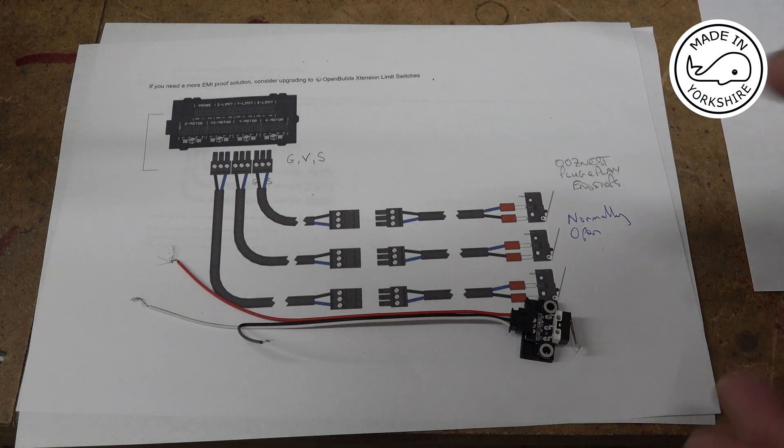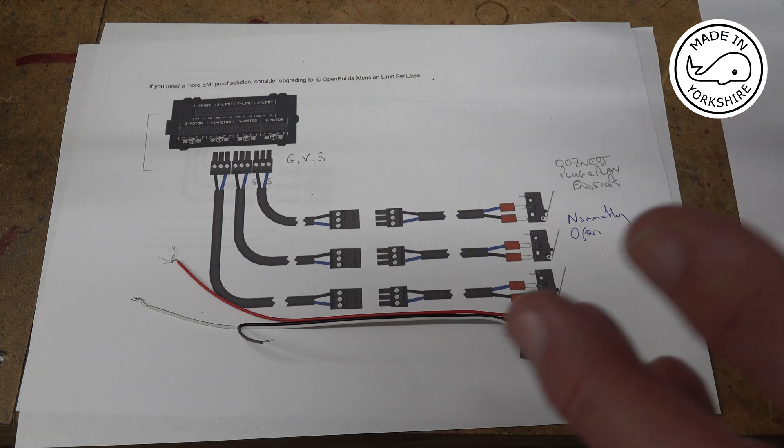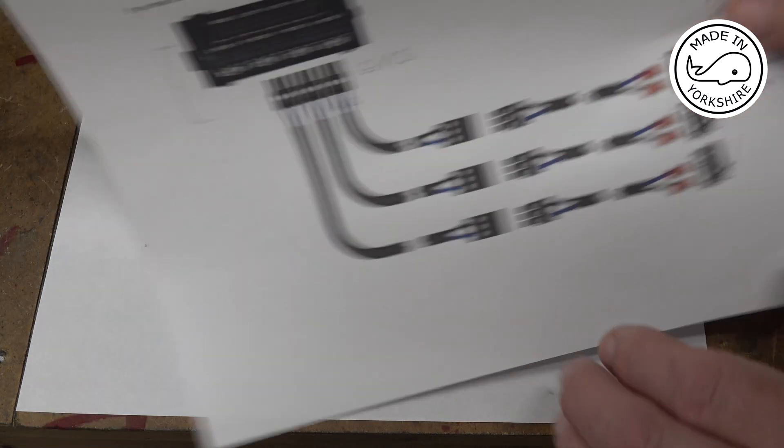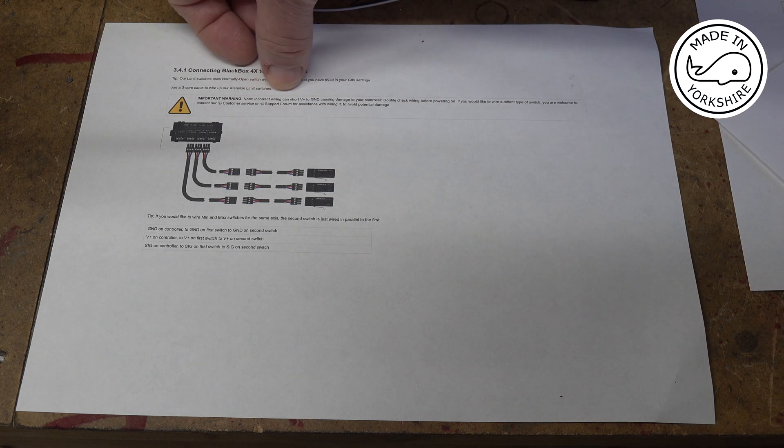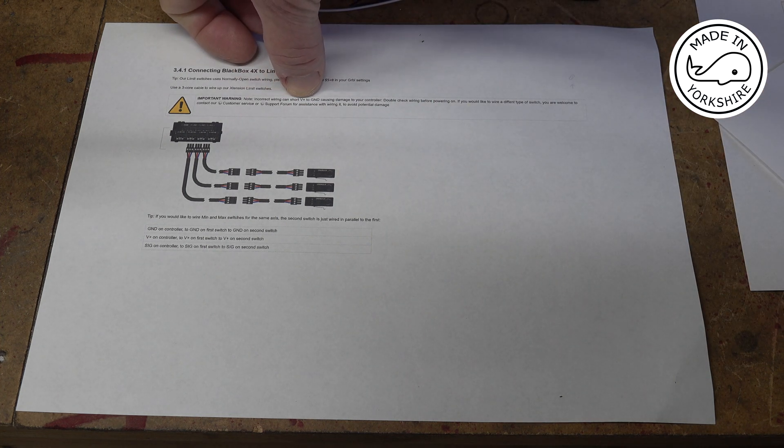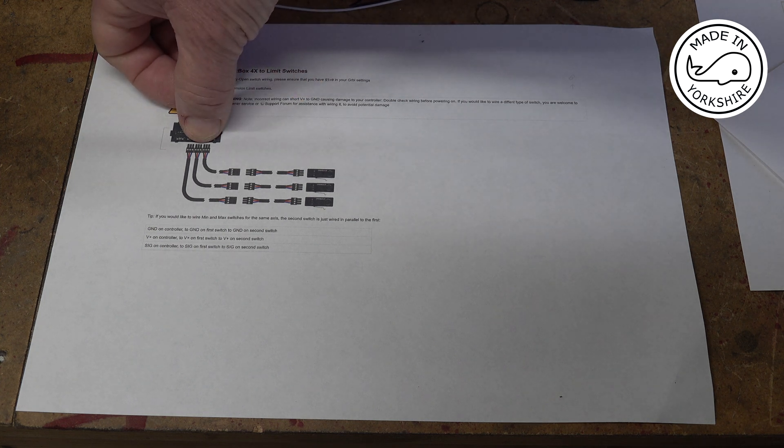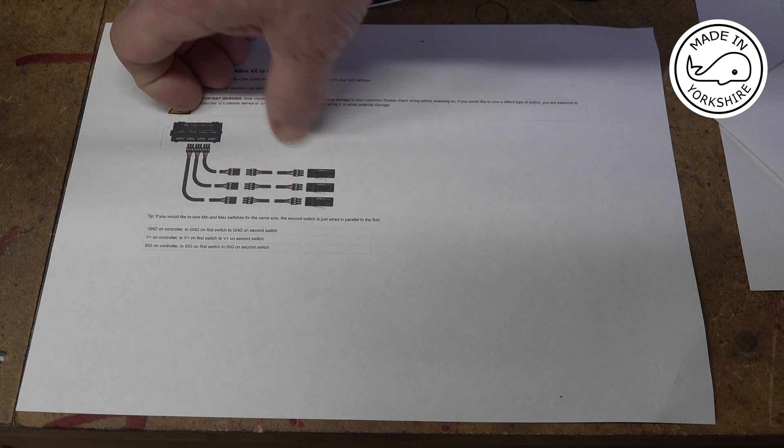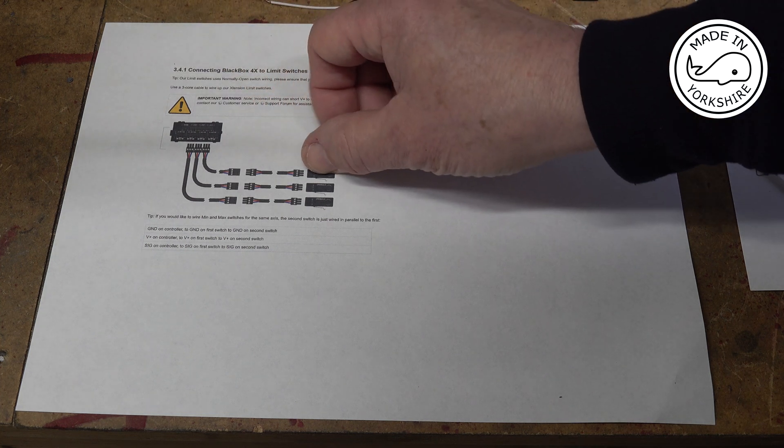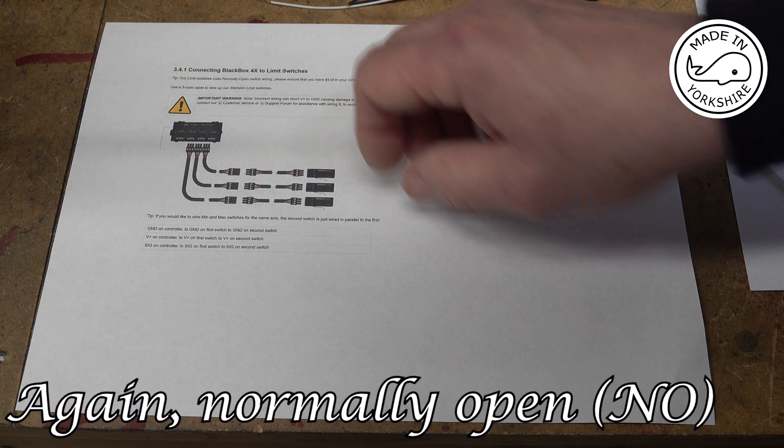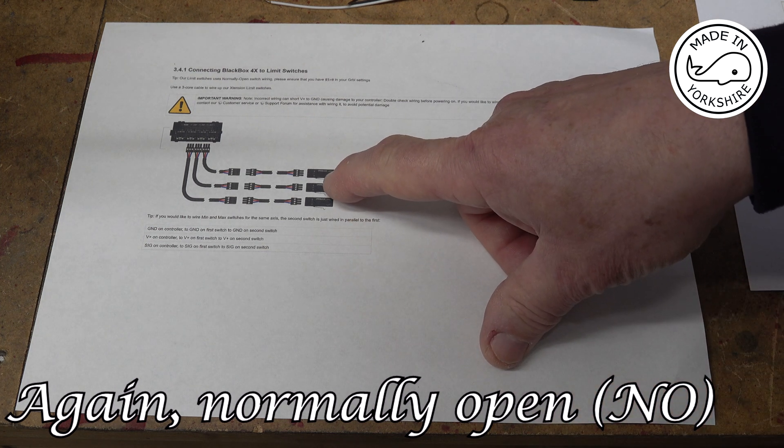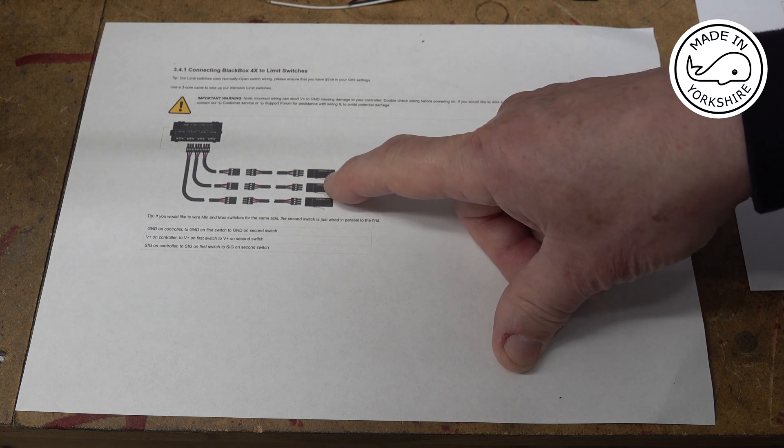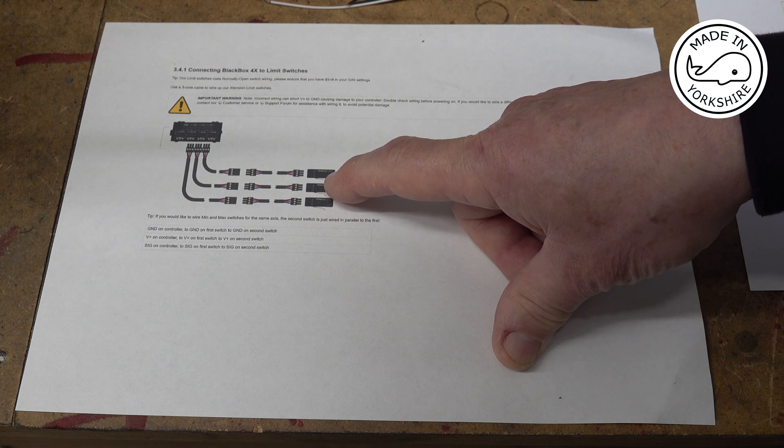And I'm sure that you can get them to work in a normally closed position. But there are warnings in the OpenBuilds documentation basically saying incorrect wiring can short the plus volts. So the central pin has got voltage in it. And this shows you them wiring the black box switches up and they use voltage in them. And I think the reason to have voltage in there is to try and address any signal problems.